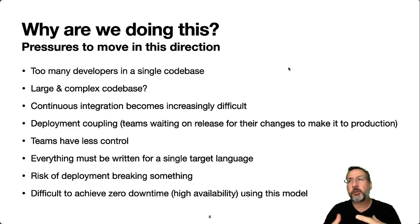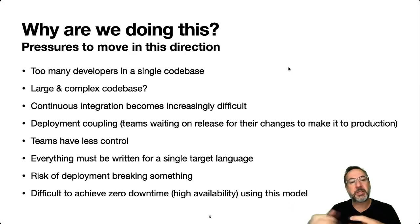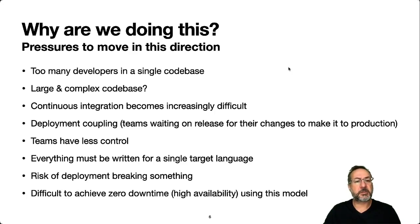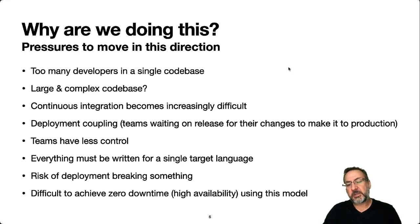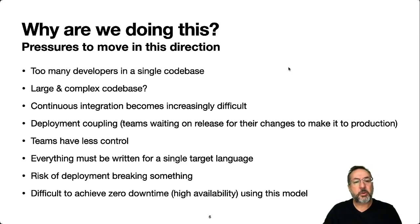We have issues with deployment coupling — the idea that multiple features are coupled together and you cannot release one independently of others. Teams have less control with respect to releasing and monitoring their systems. There's a central team in charge of releases, which happen less often than desired, leading to more risk: the risk of something going down, the risk of our system not being as available. So we're pressured to move in a direction to solve these problems.